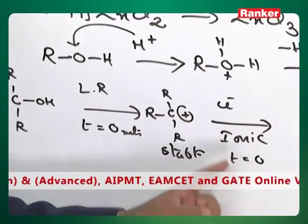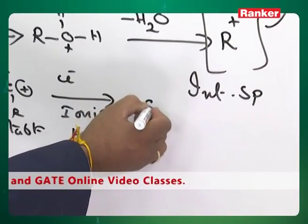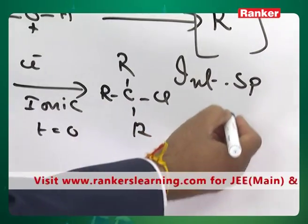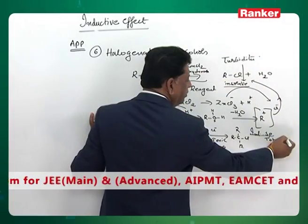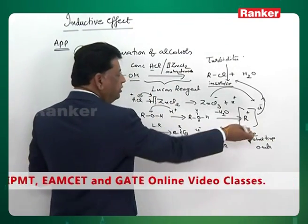All ionic reactions, time is zero minutes. Step one is zero minutes because it is stable. Step two is zero minutes because it is ionic reaction. Finally tertiary alkyl chloride is formed. Total time required is also zero minutes, because zero plus zero is zero.